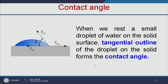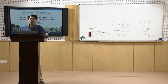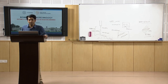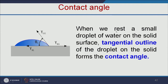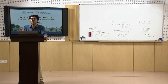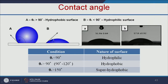An important property of any nano scaffold is hydrophilicity — when the material is hydrophilic, it allows cells to attach and grow well. Hydrophilicity is measured using contact angle measurements: a small drop of water is placed on the solid surface, and the tangential outline of the droplet forms the contact angle. A contact angle less than 90 degrees means the material is hydrophilic; greater than 90 degrees means hydrophobic; greater than 150 degrees means super hydrophobic.